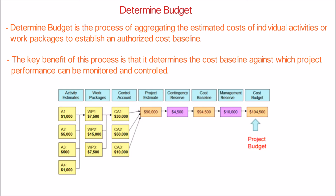Moving to the next level, all the work packages WP1, WP2, and WP3 are part of control account CA1, and the cost can be estimated for CA1 by adding up the cost of the individual work packages, and the value is $30,000. By adding up all the costs at the control account level, we can estimate the project estimate as $90,000.